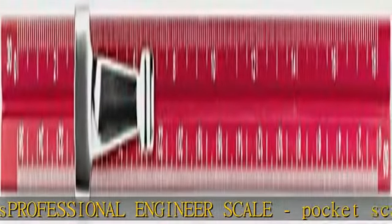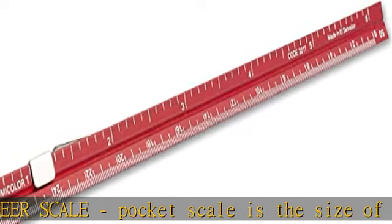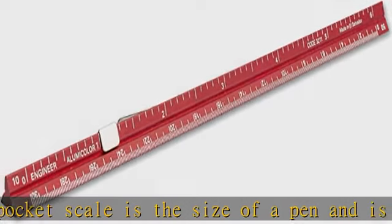Calibrations of pocket-sized engineer scale are 10, 20, 30, 40, and 50 parts per inch. Red pocket scale.